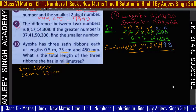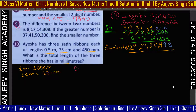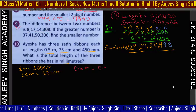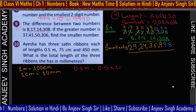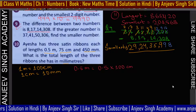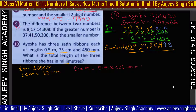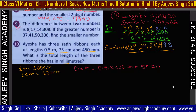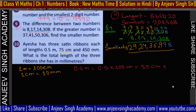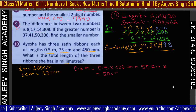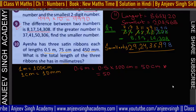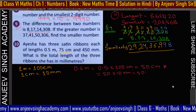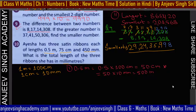0.5 meter को centimeter में convert करो: 0.5 × 100 = 50 centimeter। फिर millimeter में: 50 × 10 = 500 millimeter। दूसरा ribbon: 75 centimeter × 10 = 750 millimeter। तीसरा ribbon पहले से millimeter में है: 450 millimeter।